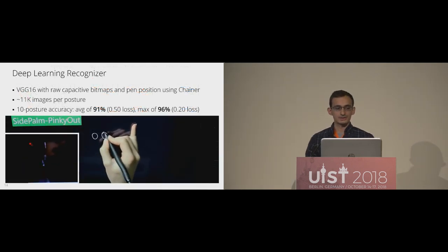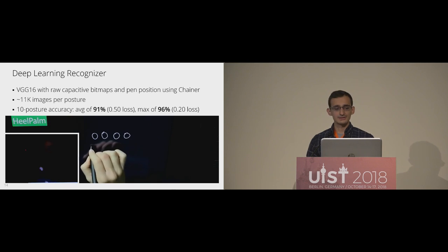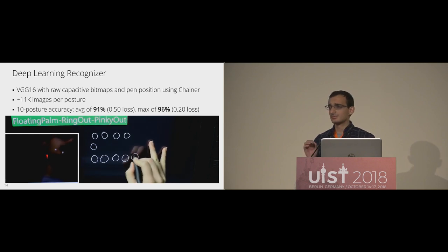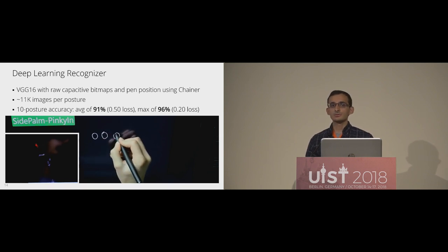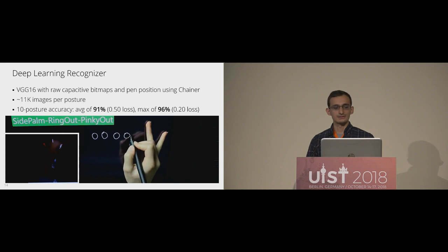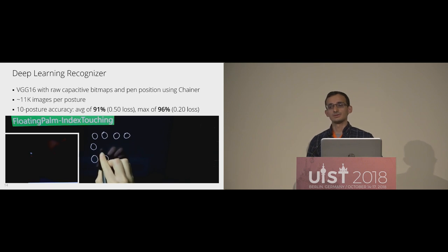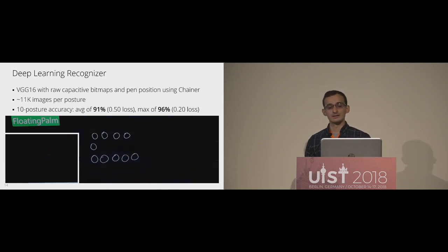Then we had our deep learning recognizer, used for the second question. This was done by Fabrice and his colleagues at Preferred Networks. We trained a convolutional neural network on the raw capacitive data from the tablet — you can see a sample of that data in the inset. We had about 11,000 images for each posture, which we also augmented with rotation and translation. On our 10-posture set, we achieved an average accuracy of 91%. So although there could be improvements, we think this answers the question of whether these are recognizable with a yes.